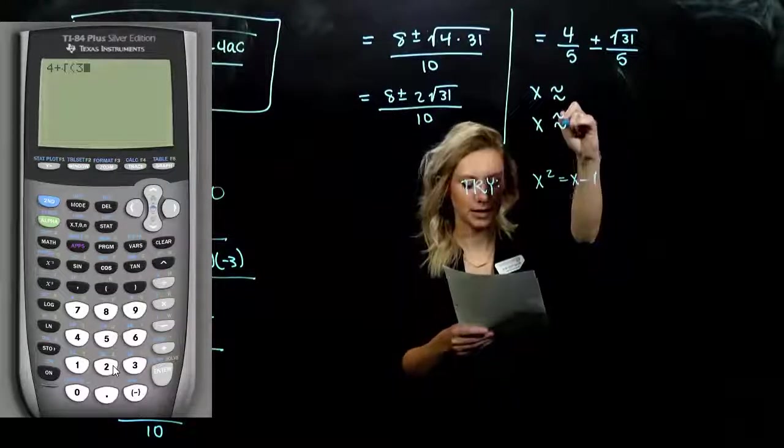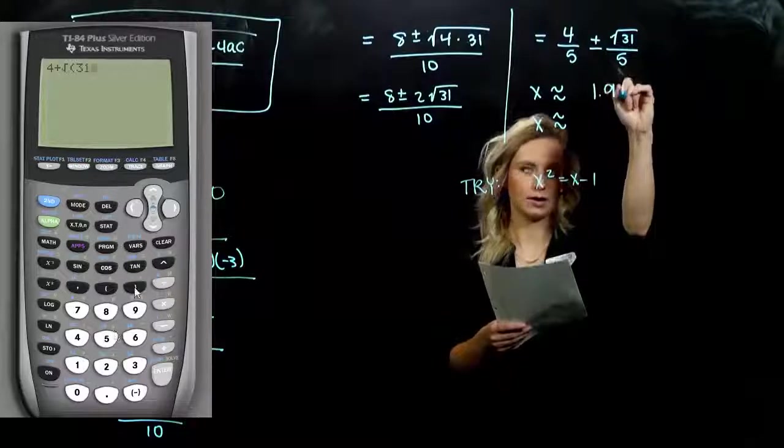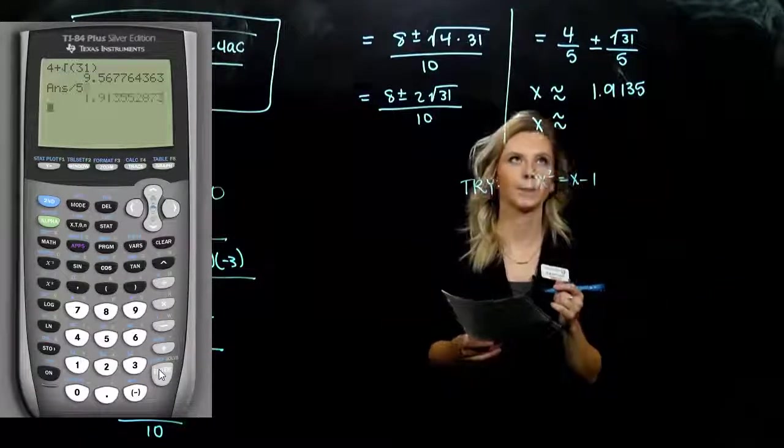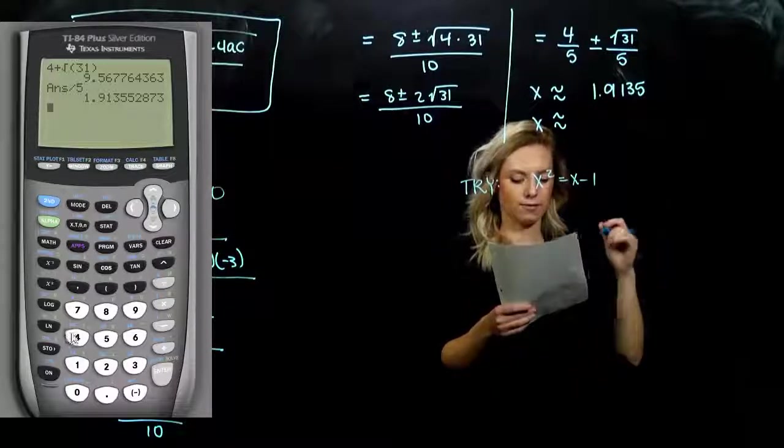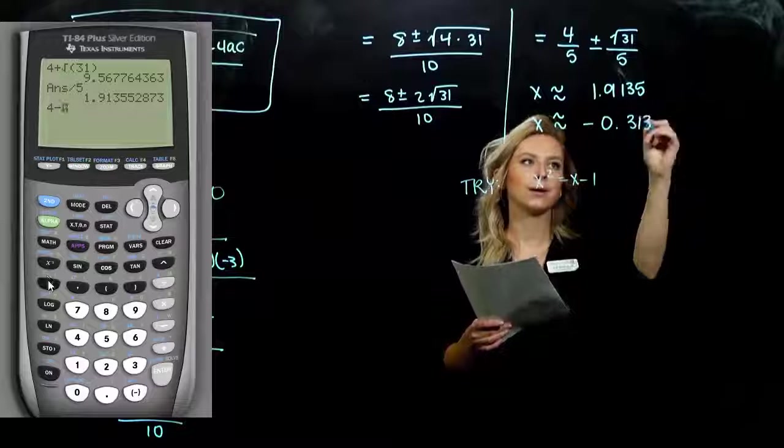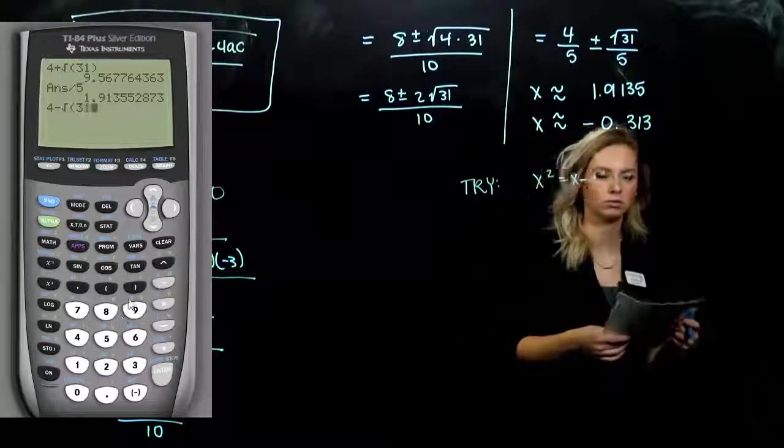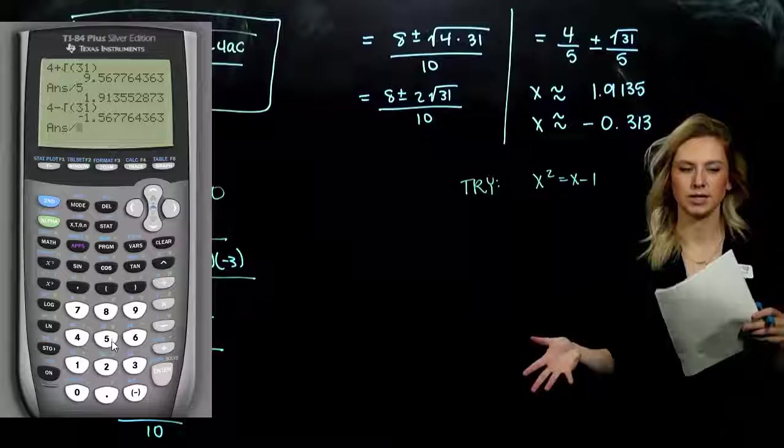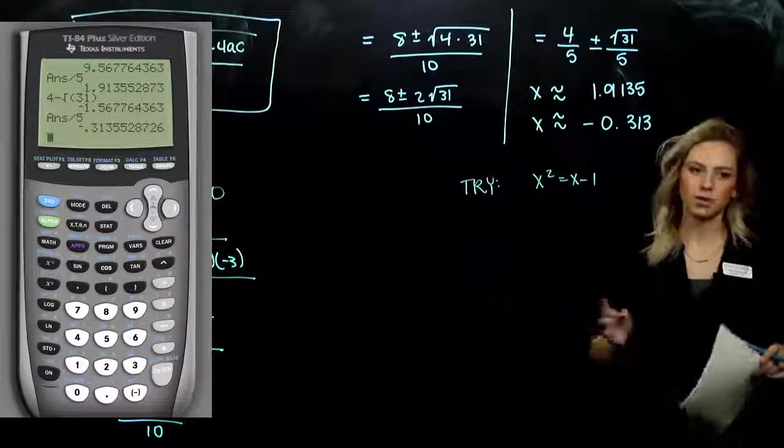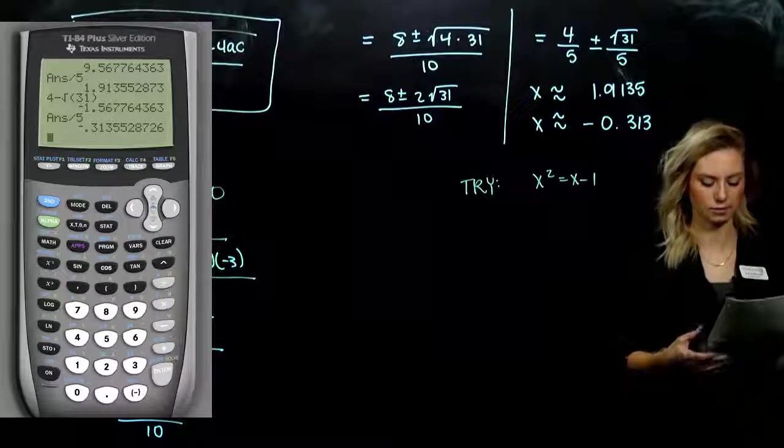But my two options for the approximations then. Positive root comes out to be 1.9135, around there when we use our calculator. And the negative root, negative 0.313. So pretty small. And we could graph it and actually look at the picture and see if those roots are around those values. You can always plug them back into the original. Check and make sure that way as well.